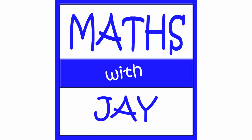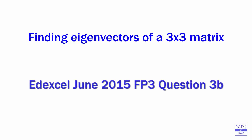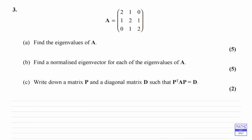Hello, welcome to Maths with Jay. In a previous video we found the eigenvalues of A for this exam question, so the next thing to do is part B. We're going to find the eigenvectors first and then we'll normalize them — that just means make sure that their length is 1 — so let's make a start.